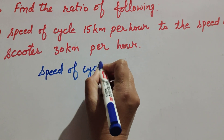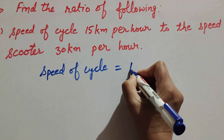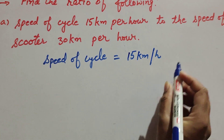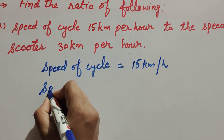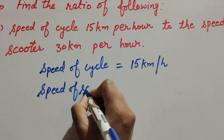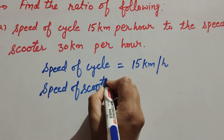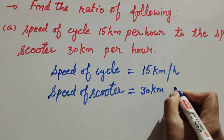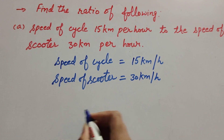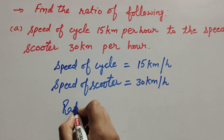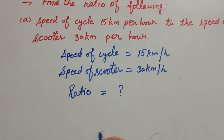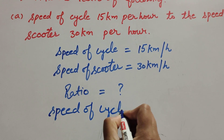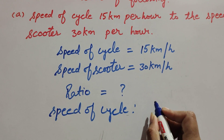Speed of cycle is equal to 15 kilometers per hour, and speed of scooter is equal to 30 kilometers per hour. So we find the ratio: speed of cycle to speed of scooter.